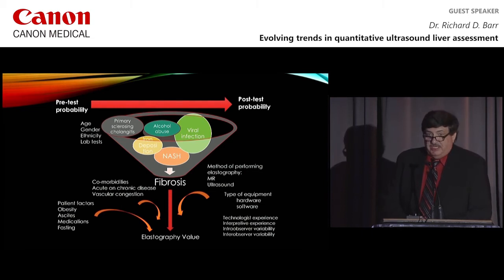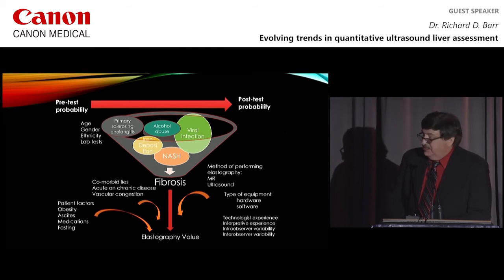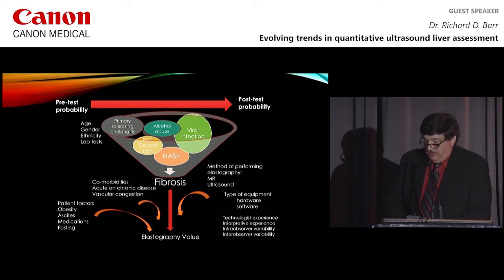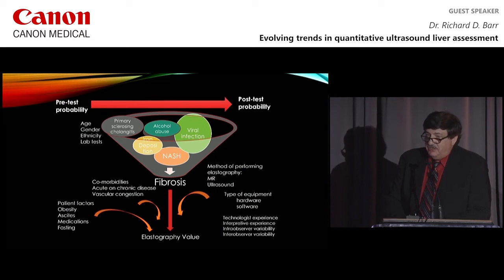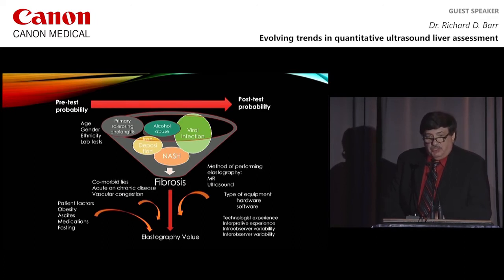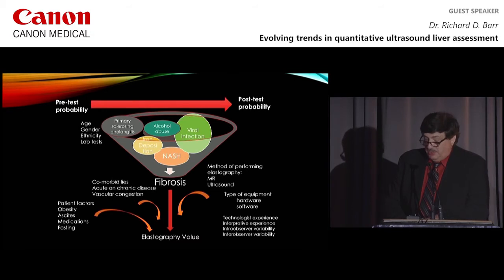This slide is from the SRU — Society of Radiologists and Ultrasound Consensus — written in 2015 that Dr. Ferrioli and I were authors of. It summarizes all the things we have to look at when looking at liver stiffness values. We've got pretest and posttest probability, different diseases leading to fibrosis and cirrhosis, age, gender, ethnicity, and lab tests may affect results. Patient factors such as obesity, ascites, medications, and fasting can affect results. Comorbidities such as acute or chronic disease, as well as vascular congestion, also affect results, as do differences between MR and ultrasound and multiple different ultrasound systems with different hardware and software.